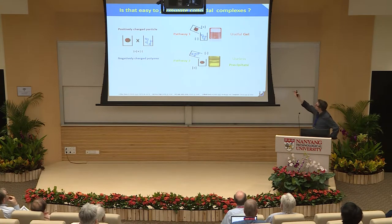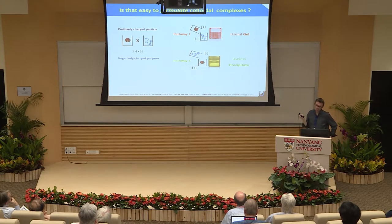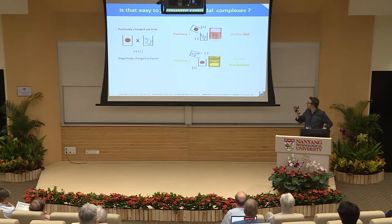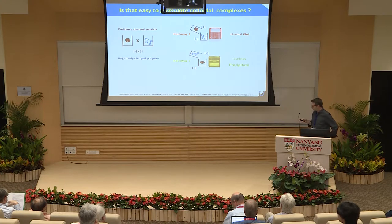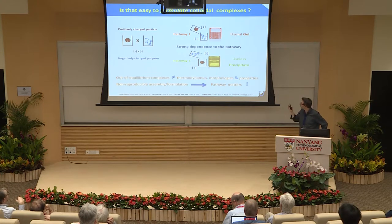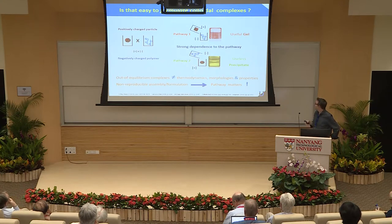The answer depends on what you do first at the bench. Either you pour a particle into a polyelectrolyte solution and you get a useful gel and you're happy. But if you do the reverse, you get a precipitate, which is useless. So you start all over the experiment many times until you understand that you have to change the addition order or reduce the concentration. This is basically linked to the fact that most of the systems we are dealing with are out of equilibrium.